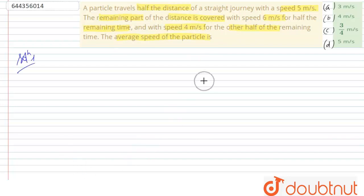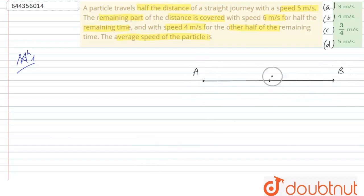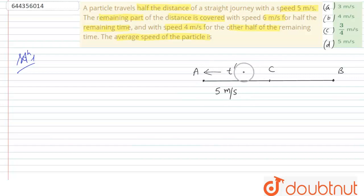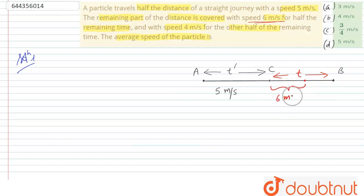So let's start. First of all, let's understand the situation: the total distance runs from two points A to B, and C is the midpoint of the total distance. According to the question, the first half of the total journey from A to C is traveled with 5 meter per second, and the time taken for this half journey is T'. The remaining half distance is traveled in time T, with 6 meter per second for the first half time (T/2) and 4 meter per second for the second half time (T/2).